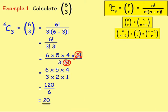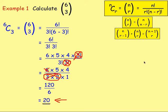You could also cancel further: six is the same as three times two, so you could cancel that out, leaving five times four which is 20 over one — the same answer. You can choose whichever method you prefer.